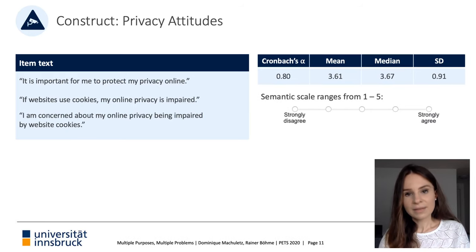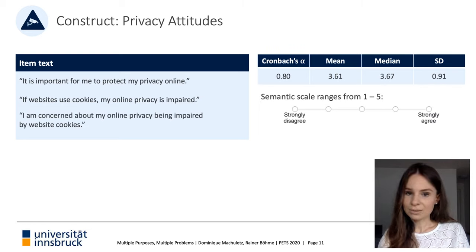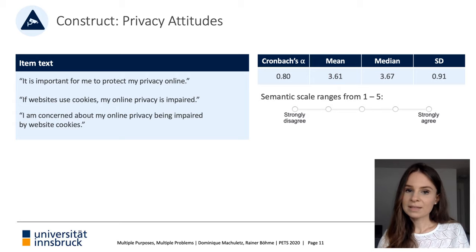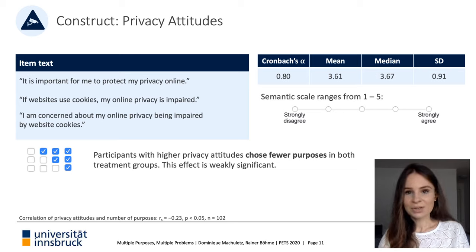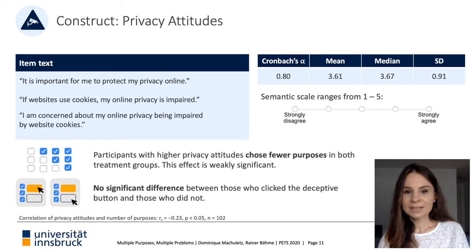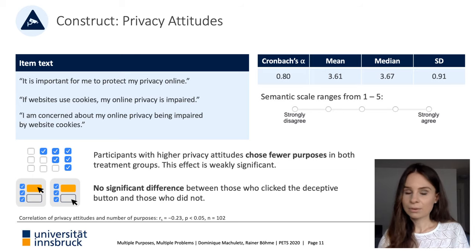Also worth mentioning is participants' overall privacy attitudes. Participants were asked to state if protecting their online privacy is important to them and if they are concerned when websites use cookies. We find that participants with higher privacy attitudes actually selected fewer purposes in both treatment groups, which challenges the privacy paradox — you can read in the paper how we interpret it. However, we do not find a significant difference in privacy attitudes between participants who clicked the deceptive button and those who did not.